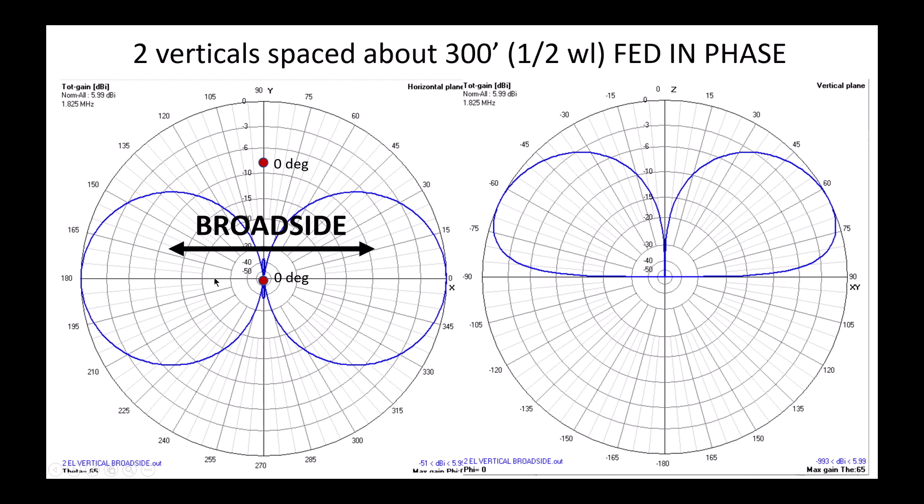This is what we call a broadside array. It's a broadside array because the maximum gain is broadside to the two verticals. Pretty simple.